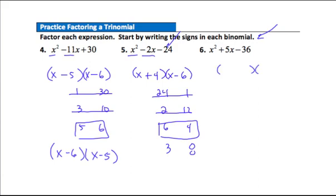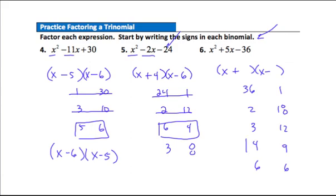Practice Question 6: the last term is negative, so one sign is positive and one is negative. We need x and x. Factors of 36: 36 and 1, 2 and 18, 3 and 12, 4 and 9, 6 and 6. We want a middle term of 5x, and since one sign is positive and one is negative, we're looking for a factor pair with a difference of 5. That's 4 and 9. To get positive 5x, I need more positives, so I put the 9 with the positive sign and the 4 with the negative sign.